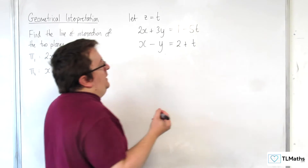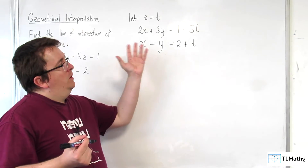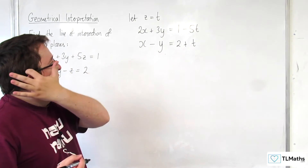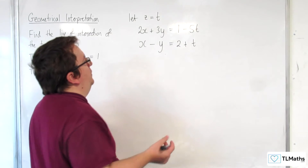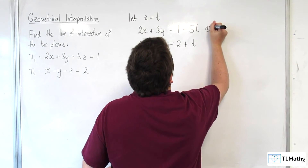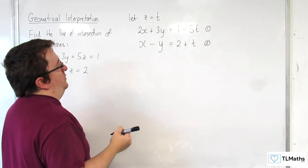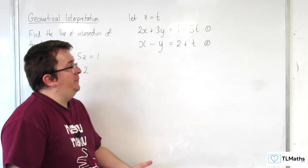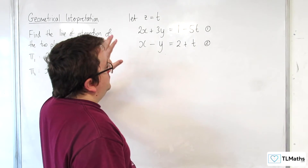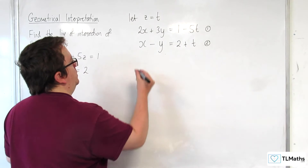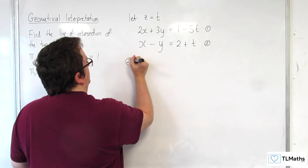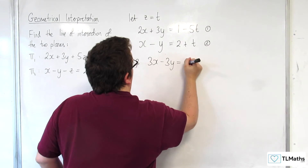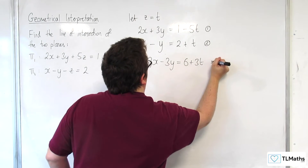The idea at this point is to solve these simultaneous equations, considering t as some number. This is equation 1 and this is equation 2. It looks a little bit odd — we're going to have to do this algebraically, we can't just plug this into our calculators. So what I'll do is multiply equation 2 through by 3. Let's call that equation 3.